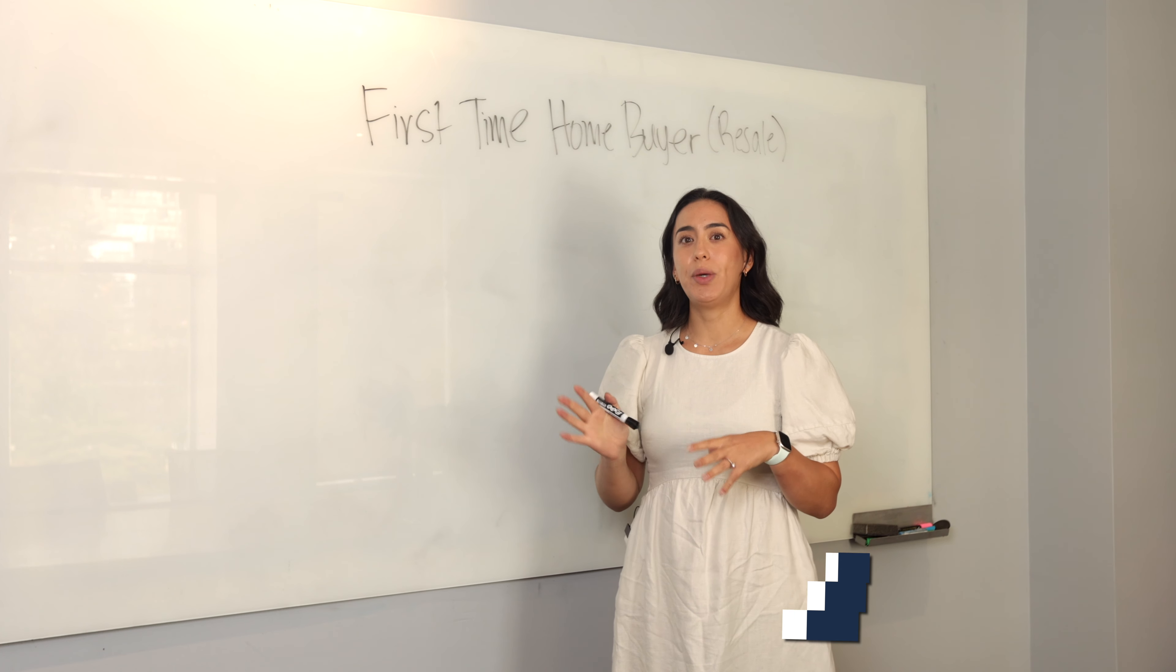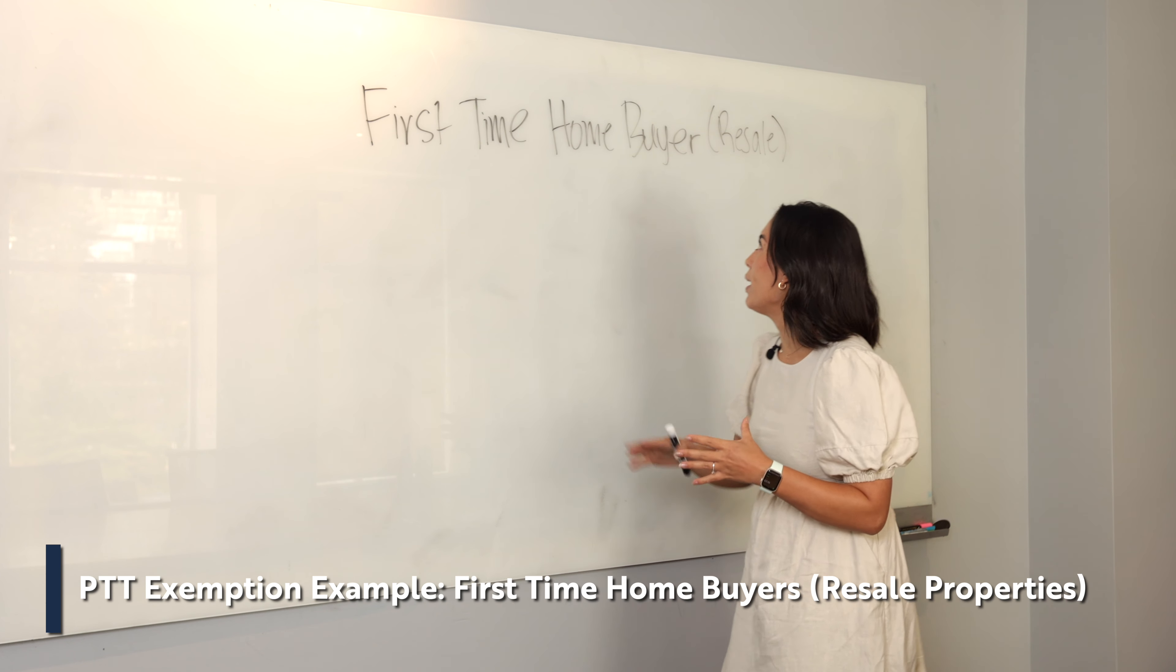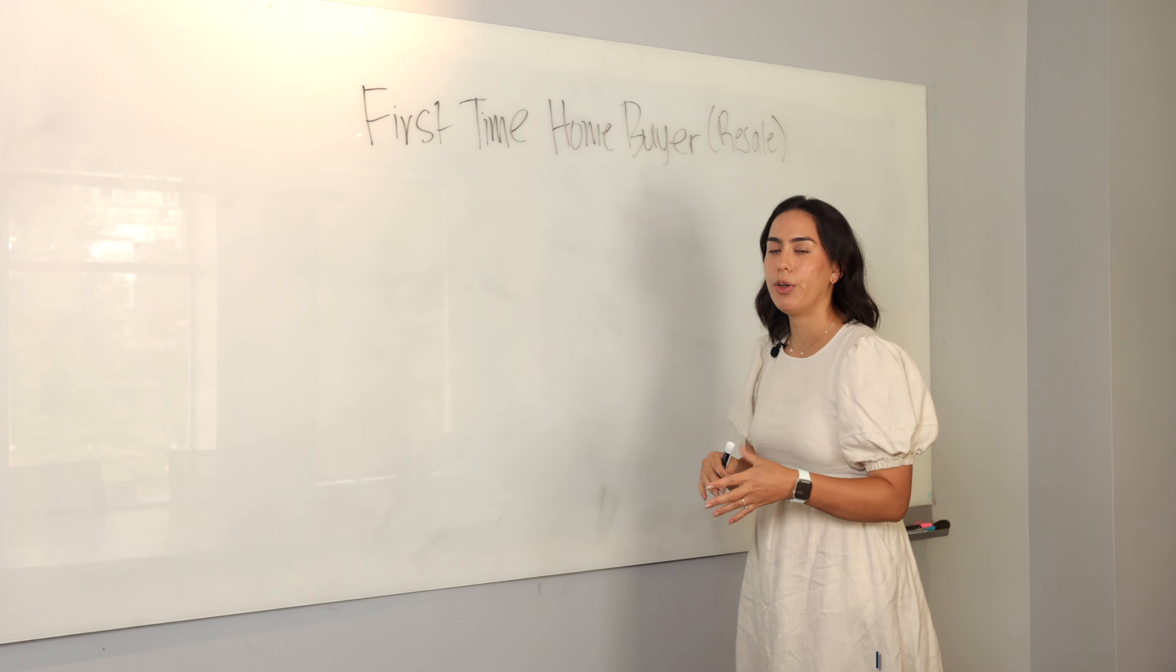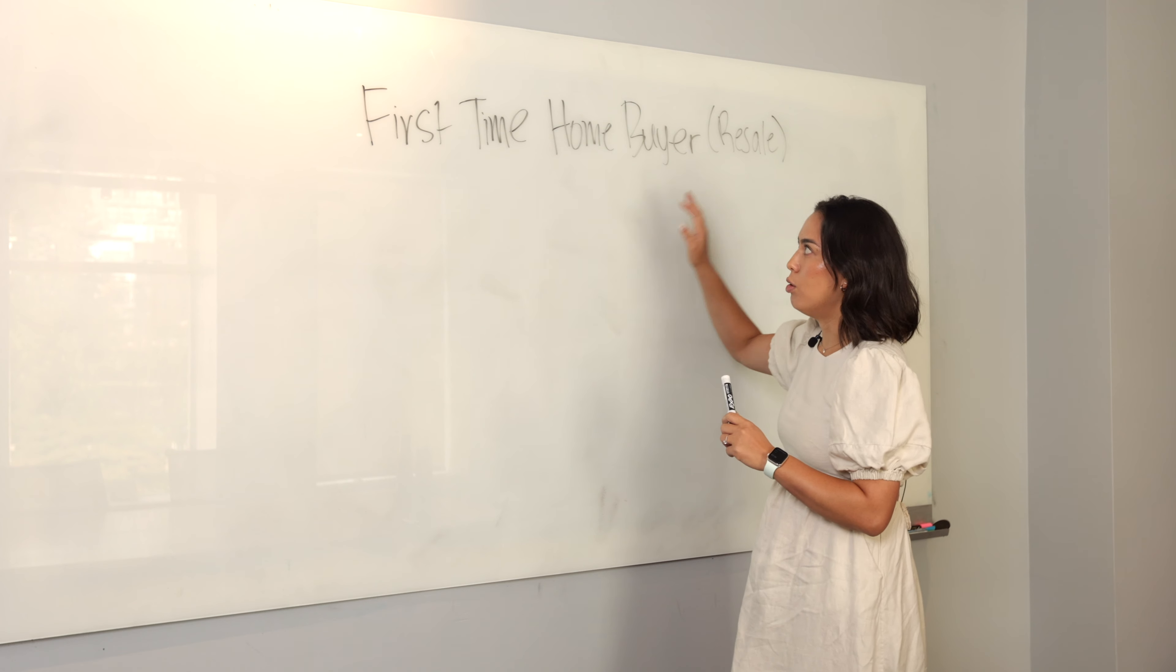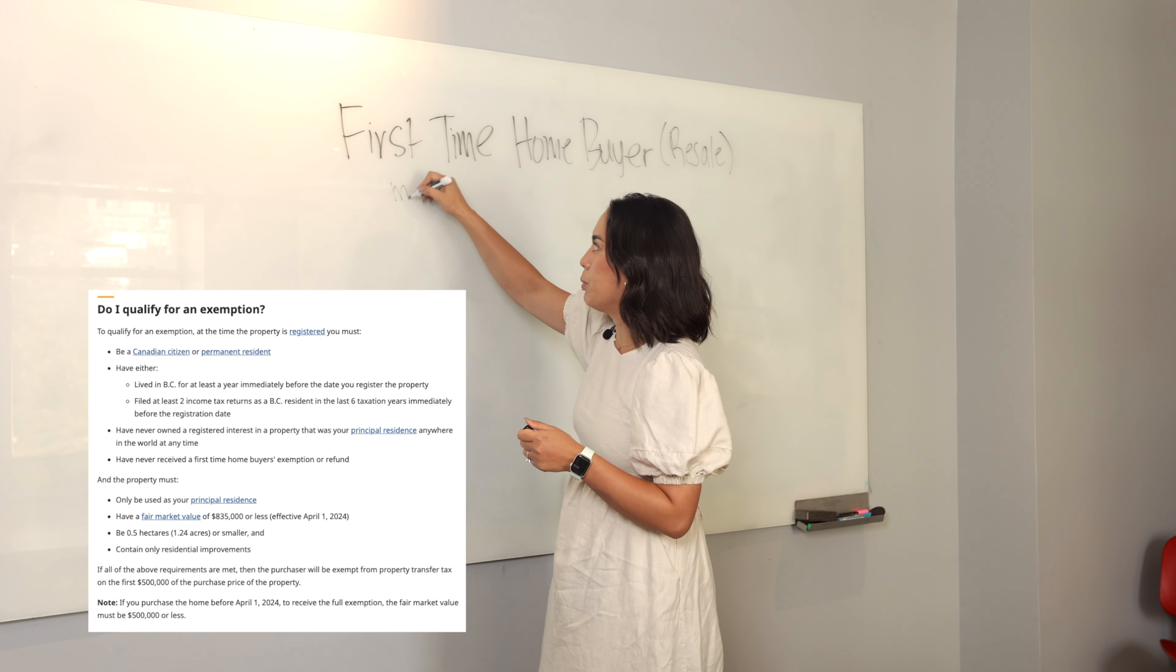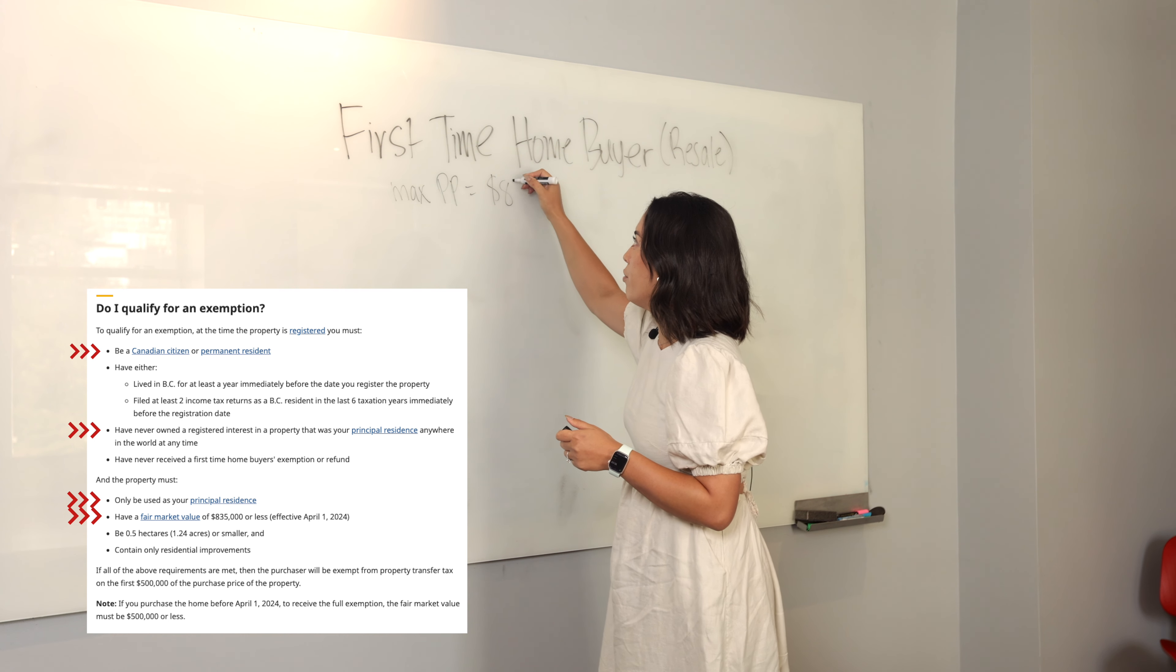Getting into how you calculate the first-time home buyer exemption, starting off, just as a reminder, this is for resale homes. If you're dealing with a presale home, you're going to be working off the newly built home exemption, in which case it doesn't really matter if you're a first-time home buyer or not. But when we're dealing with resale homes, this is what we're dealing with for first home buyers. The max purchase price is going to be $835,000.